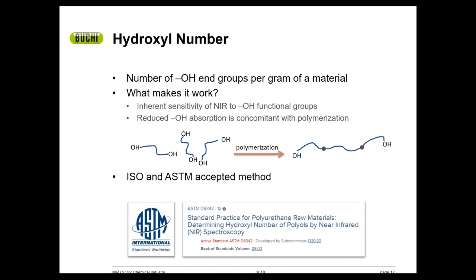One common quantitative application that I mentioned earlier is the determination of hydroxyl number, or the number of OH groups per gram of a material. This measurement is important for determining stoichiometry or endpoints of many chemical applications. In fact, NIR is considered a standard practice by ASTM International for determining hydroxyl number of polyols for polyurethanes. The sketch shown is an attempt to simply illustrate a polymerization reaction, where we see the number of free hydroxyl groups in the sample decrease along with the extent of polymerization.